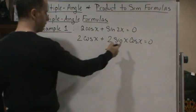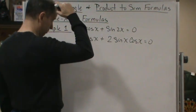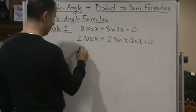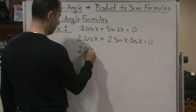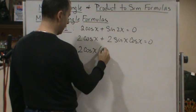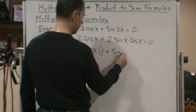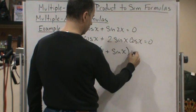And now I can factor out cosine x. So I get 2 cosine x times 1 plus sine x is equal to 0.